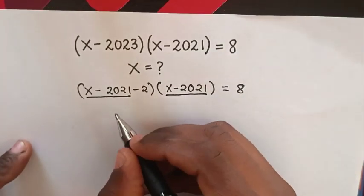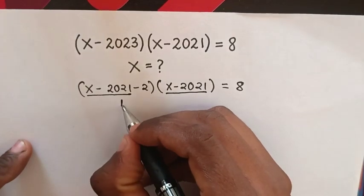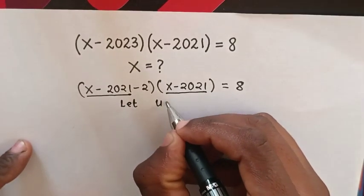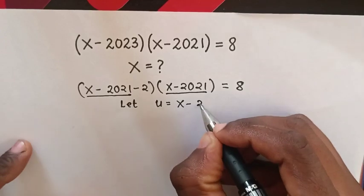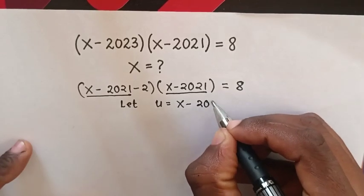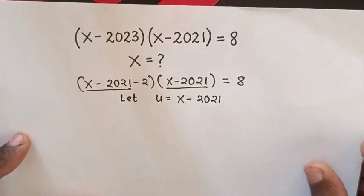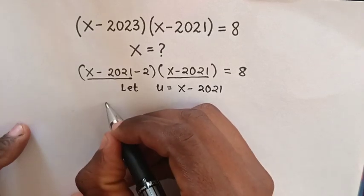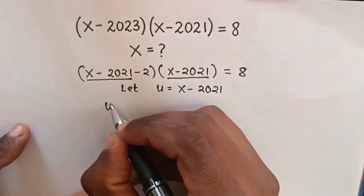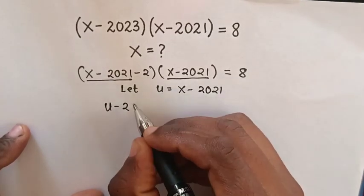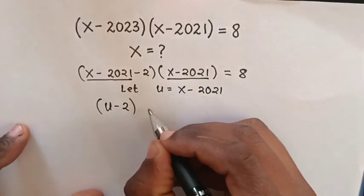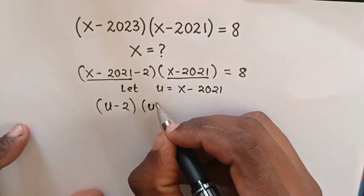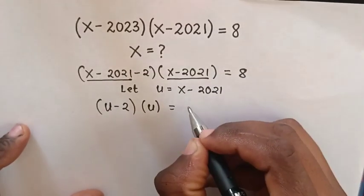We can see x minus 2021 is common. So next, we are going to let u equal to x minus 2021. We substitute u, so it will be (u minus 2) times u is equal to 8.